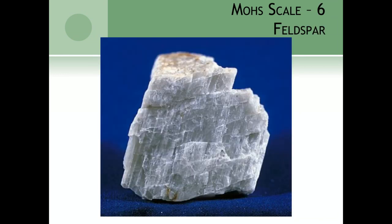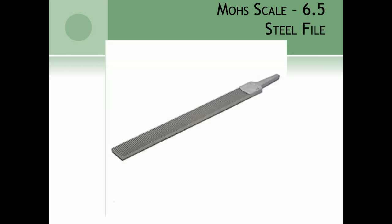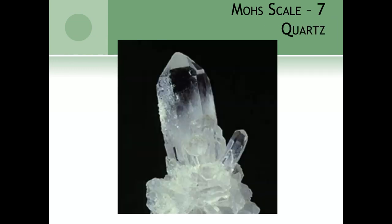Feldspar is ridiculously common — a very common rock-forming mineral — and it's a six on the Mohs scale. Steel is a human-made product, not a mineral, but it's in our everyday lives. Most cutting knives, butcher knives, and steak knives are made of steel. Steel is about a 6.5 on the Mohs scale. Number seven is quartz, a ridiculously common mineral found all over the world, with a pretty good ability to cut most things.